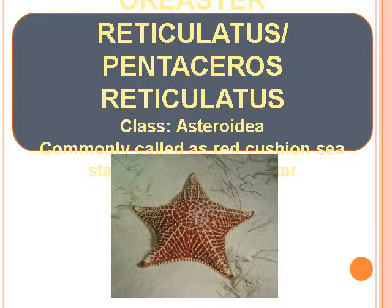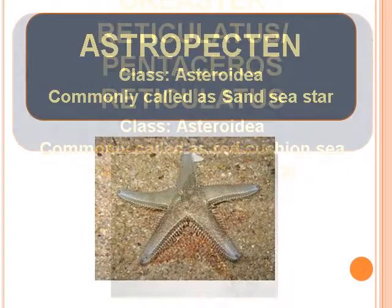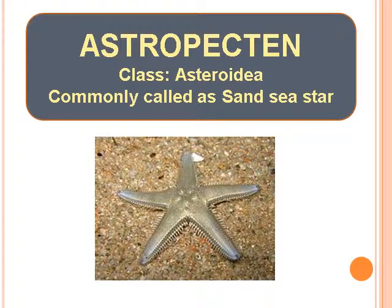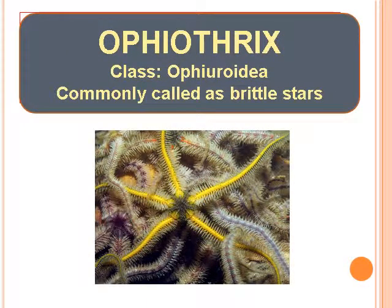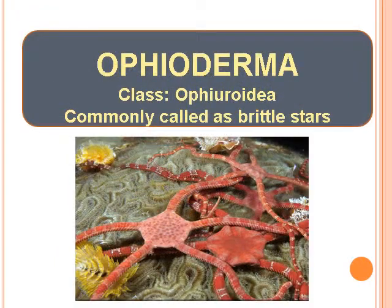Oreaster Reticulatus or Pentaceros Reticulatus, class Asteroidea, commonly called as Red Cushion Sea Star or West Indian Sea Star. Ophiothrix, class Ophuroidea, commonly called as Brittle Star. Ophioderma, class Ophuroidea, commonly called as Brittle Star.